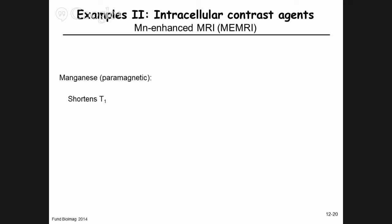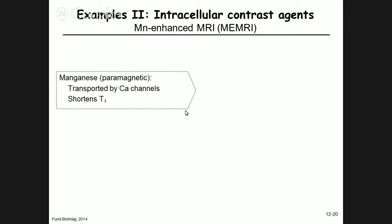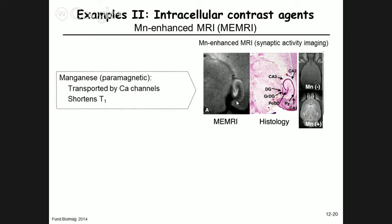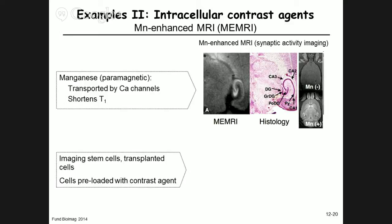Another class is intracellular contrast agents. Manganese is paramagnetic and shortens T1; it is transported through calcium channels, making it a way to measure calcium channel activity linked to neuronal activity. After manganese application to the brain, the hippocampal architecture becomes clearly visible — before manganese the structure is less defined; after application you see strong delineation of the cytoarchitecture linked to synaptic activity.